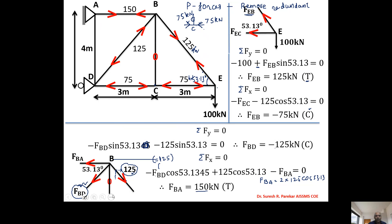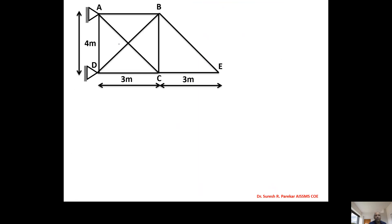Now we need to find force in member AD. The vertical component of the diagonal members gives 100 kN downward at D. Applying summation FY = 0, the vertical reaction at A balances this, giving 100 kN upward. So the force in member DA is 100 kN. These are all the P-forces in the members, and we will now tabulate them.